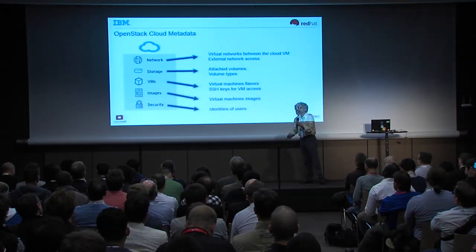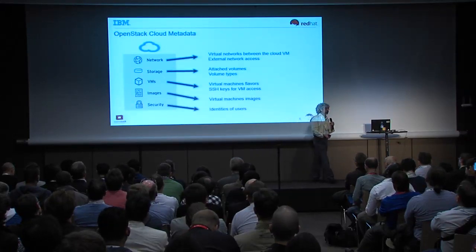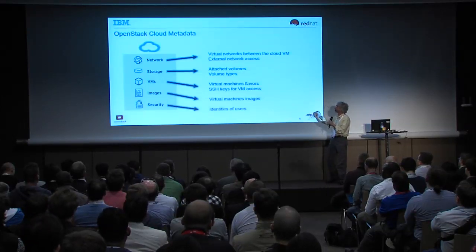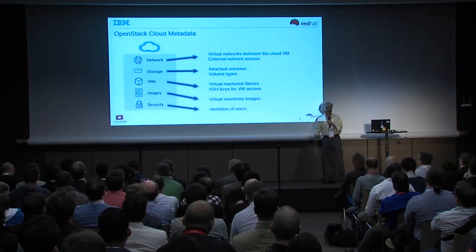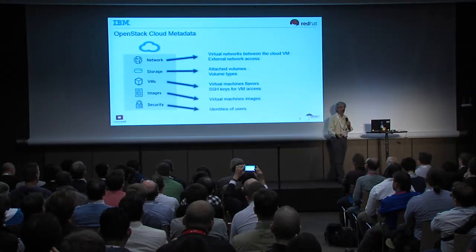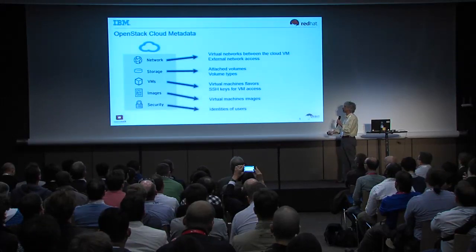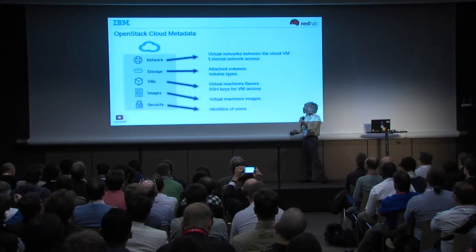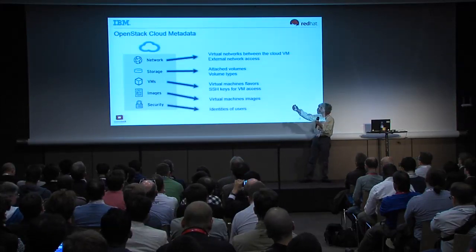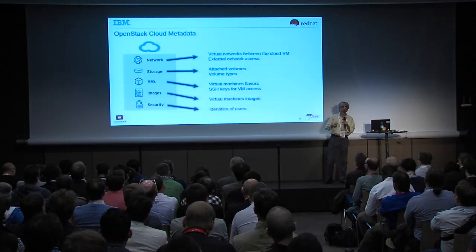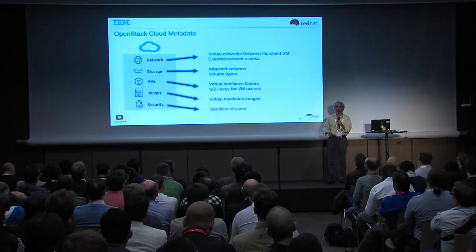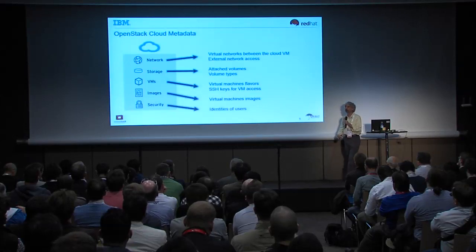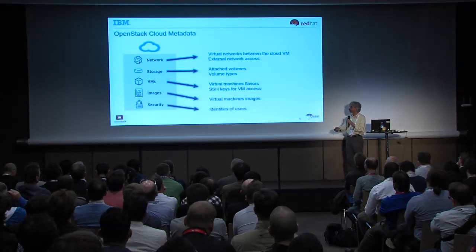For metadata consistency, we need to ensure that configuration updates are seen in the same order relative to one another when we recover, as well as relative to data updates. We don't want to see data transferred for a new storage volume where we haven't yet recorded the metadata update saying that storage volume exists. In OpenStack, we have a range of different types of metadata: Neutron has virtual networks; Cinder has provisioned volumes, VM attachments, and volume types; and Nova has VM flavors, SSH keys, and so on. When thinking about disaster recovery for OpenStack, we need to think not just about the data in persistent volumes managed by Cinder, but also about the metadata.